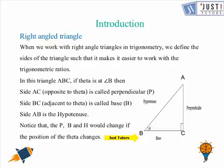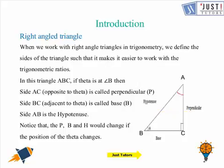Notice that if we change the angle about which we are talking — so if we are talking about angle A now — in that case the hypotenuse would remain the same, however the perpendicular and base would change accordingly. We have used some letters for all the three sides: P for perpendicular, B for base, and H for hypotenuse. This is how we define the sides on the basis of the angle that we talk about.